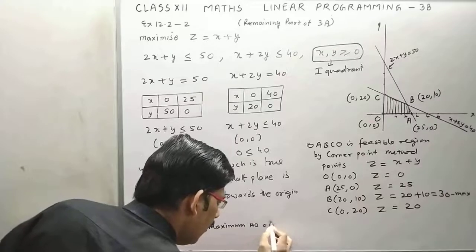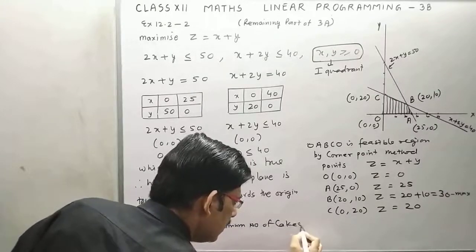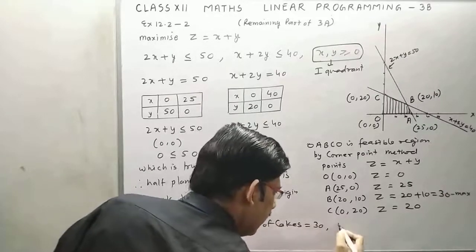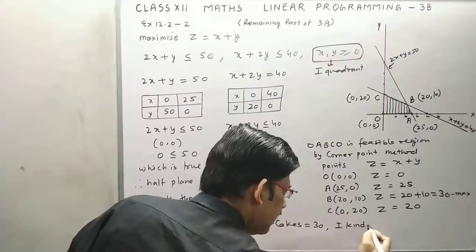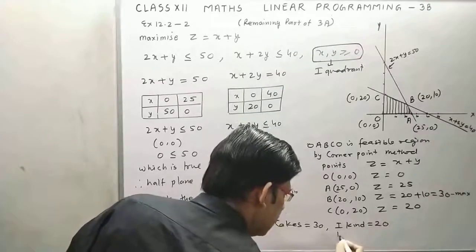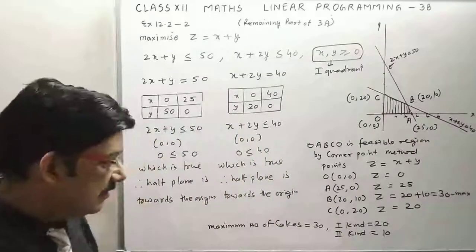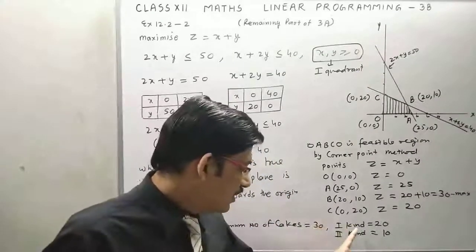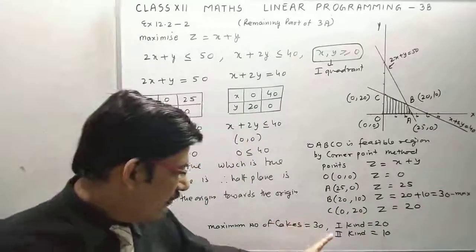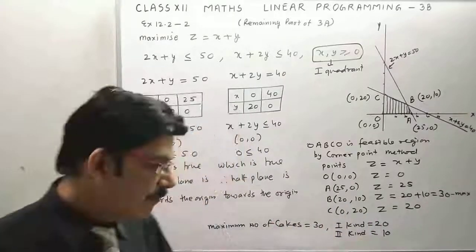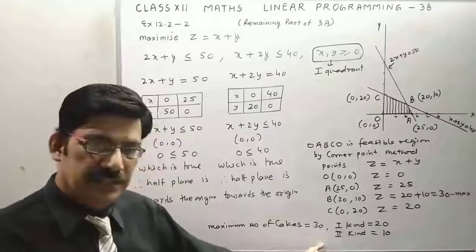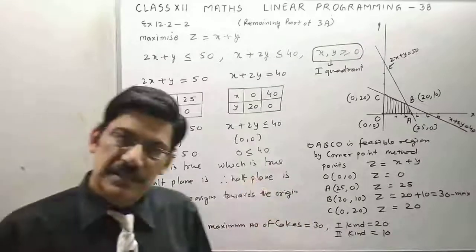Number of cakes is equal to 30, and first kind of cake is equal to 20, and second kind of cake will be 10. So this will be the answer: number of cakes of first kind is 20, number of cakes of second kind is 10, and maximum number of cakes is 30. Okay, thank you.